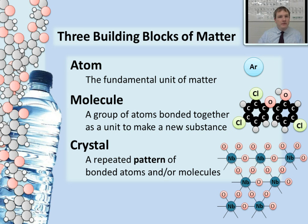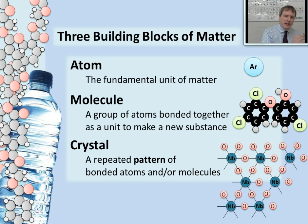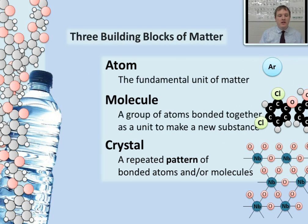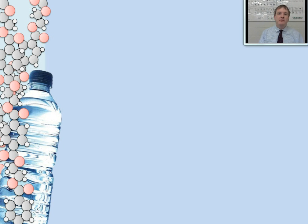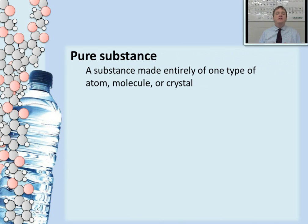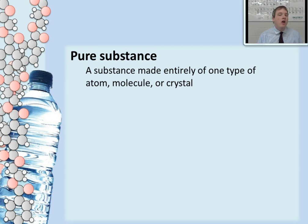All of these different building blocks are very useful in their own ways, and these are the substances that make up all of the matter around us. But how do we get from these building blocks to pure substances and mixed matter? In order to understand pure substances and mixed matter, you have to understand the building blocks. A pure substance is a substance that's made up entirely of just one type of building block — that means it's made up entirely of one kind of atom, one kind of molecule, or one kind of crystal.